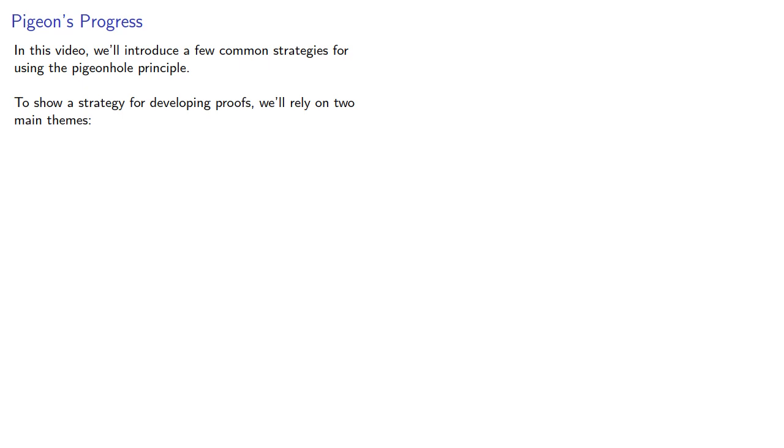To show a strategy for developing proofs, we'll rely on two main themes. Show that something will eventually occur, and then find a bound on when it must occur.